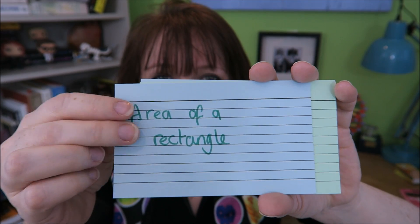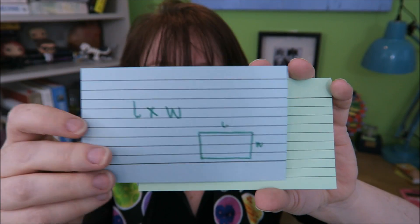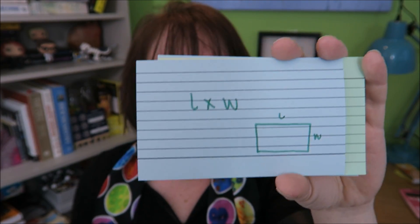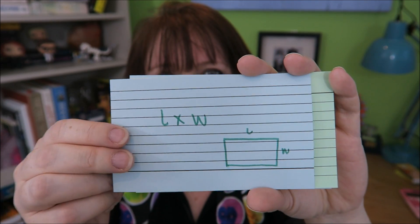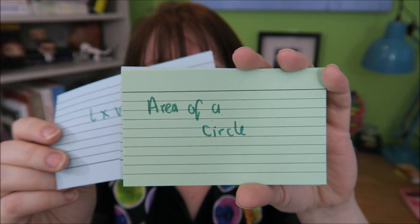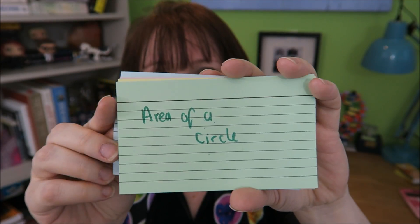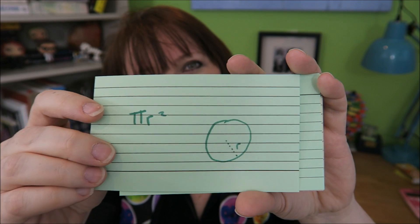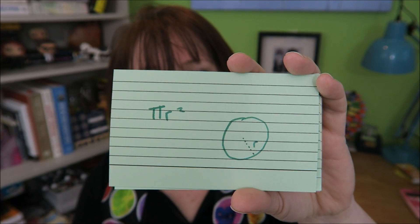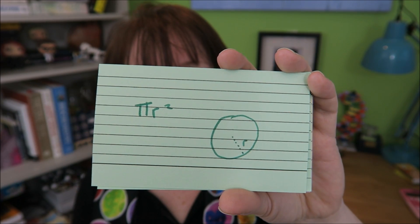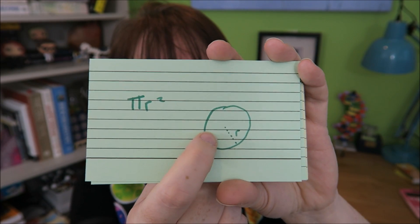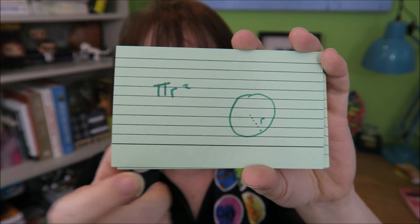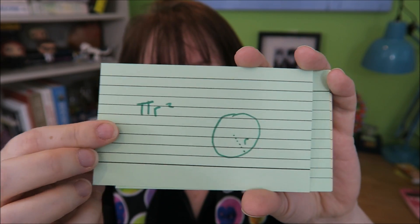Area of a rectangle: that is just length times width. Area of a circle: that is pi r squared, where r is the radius — the bit from the middle to the outside edge.